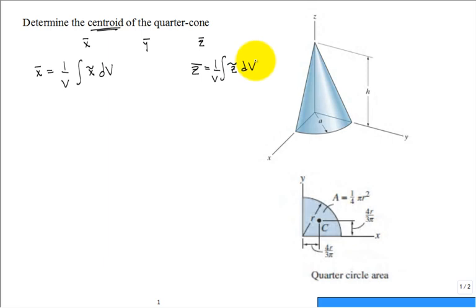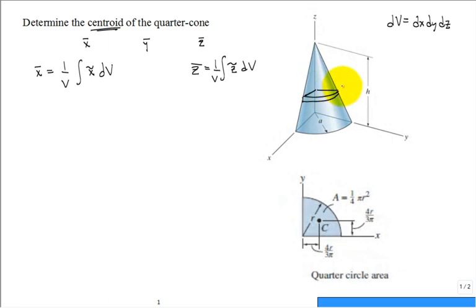For the volume element, we could use dx dy dz, but it's more insightful to reduce to a one-dimensional integral. This problem calls for quarter-circle disk elements. I went to the back of the textbook and pulled off the quarter-circle information — the area of a quarter circle and the location of its centroid in both x and y in terms of radius r.